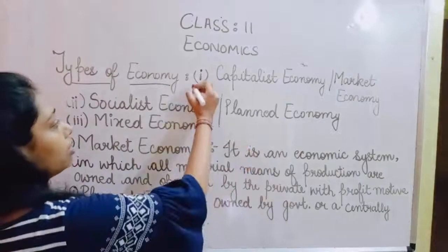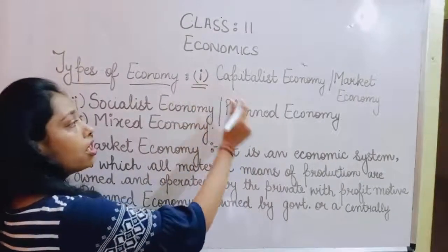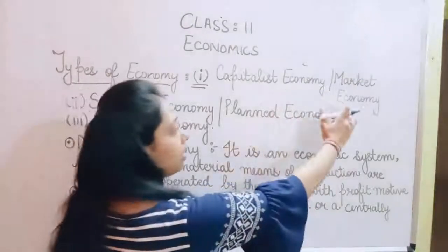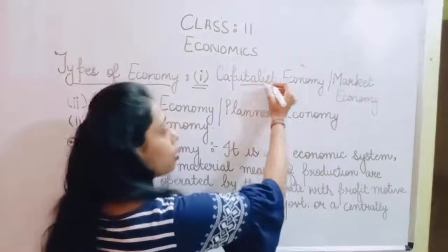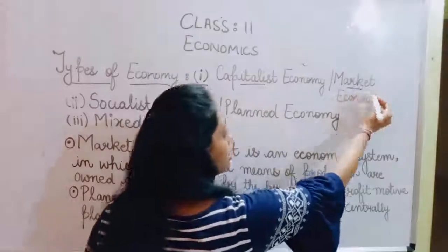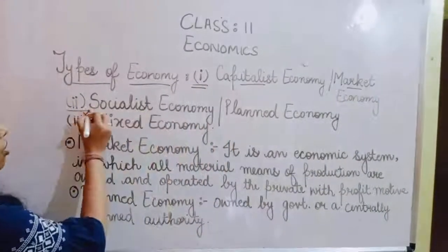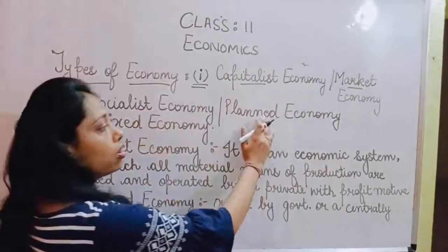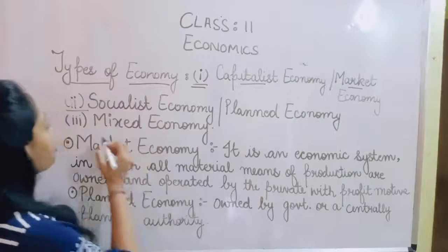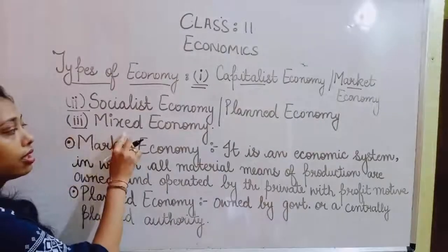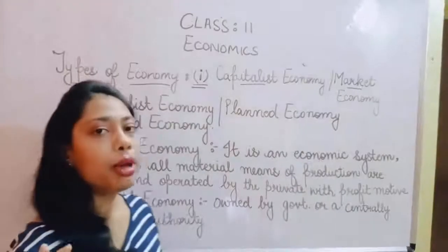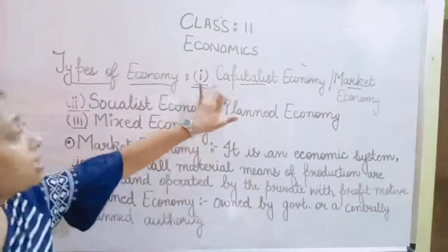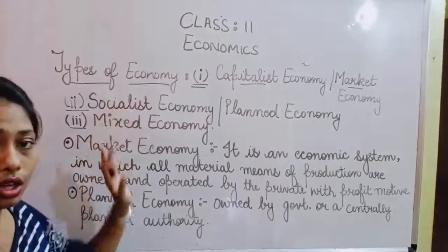As you can see, there are basically three types of economy. Number one is a capitalist economy, or a market economy — capitalist economy is also called market economy. The second one is your socialist economy, also called planned economy. And the third is a mixed economy, which is a combination of both the capitalist economy as well as the socialist economy.